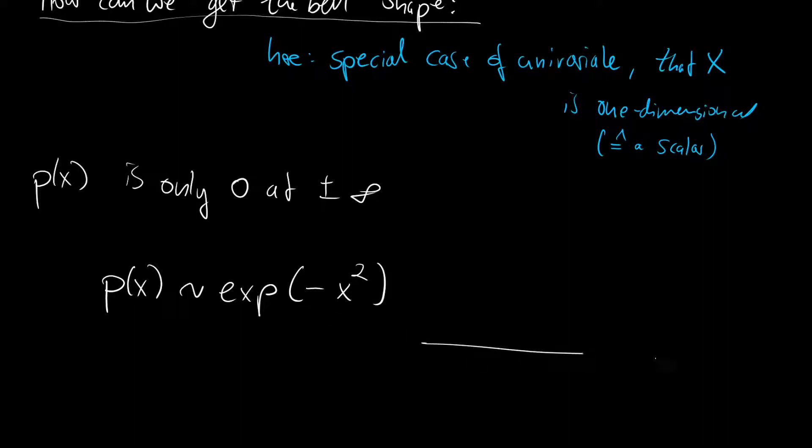And if we were to plot this kind of function on the chart with x and p of x then we would get a distribution that looks somewhat like this. So it is centered around 0 and it has some sort of a unit scale.